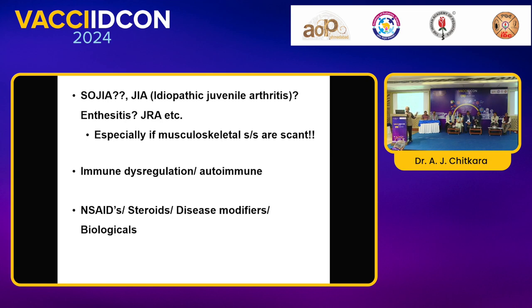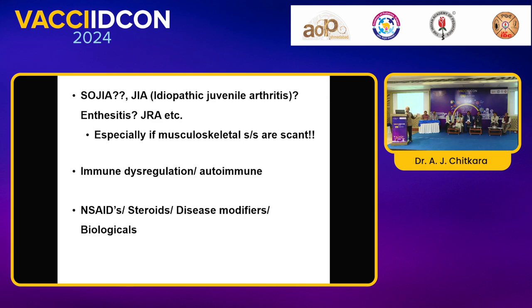To update you: most of these are immune dysregulations, which may be precipitated by any preceding event or some autoimmune component. The pattern of treating is NSAIDs followed by steroid disease modifiers and biologicals, which we leave to the judgment of our rheumatological friends.